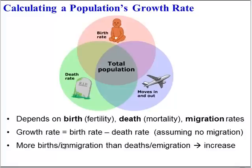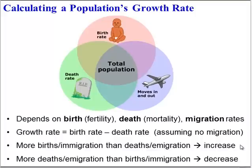In a population where there are more births, or individuals moving in, than there are deaths or individuals moving out, the population is going to increase. If there are more deaths, or people moving out, compared to births and individuals moving in, then the population will decrease.